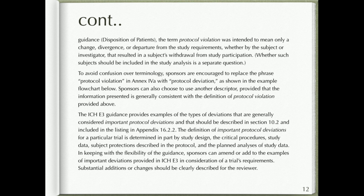To avoid confusion over terminology, sponsors are encouraged to replace the phrase 'protocol violation' in Annex IVa with 'protocol deviation.' Sponsors can also choose to use another descriptor, provided that the information presented is generally consistent with the definition above. The ICH E3 guidance provides examples of the types of deviations that are generally considered important protocol deviations and that should be described in section 10.2 and included in the listing in appendix 16.2.2. The definition of important protocol deviations is determined in part by study design, critical procedures, subject protections described in the protocol, and the planned analyses of study data. Sponsors can amend or add to the examples of important deviations provided in ICH E3, and substantial additions or changes should be clearly described for the reviewer.